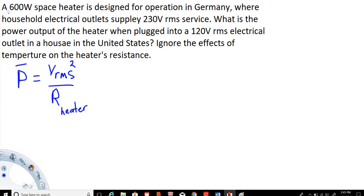Let's see what we have in this problem. We have a 600 watt space heater, and we know power is in watts, so we have a power of 600 watts. We also have, in Germany, the voltage RMS is 230. So that is 230 volts RMS squared.